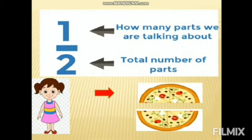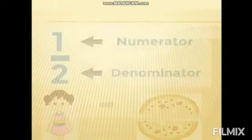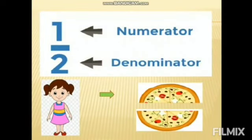There were two equal parts of the pizza and Simmi got one part, so the fraction is one out of two equal parts. The number of parts Simmi got is one, so one is the numerator. The total number of equal parts is two, and two is the denominator.